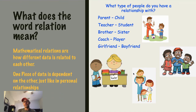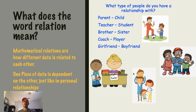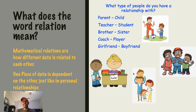Just like in personal relationships, in math, one piece of data is dependent on another. In a parent-child relationship, the child is dependent on the parent to supply their basic needs. In a teacher-student relationship, the student is dependent on the teacher to provide quality instruction. Similarly in math, we have a dependent variable, which depends on what we call the independent variable.